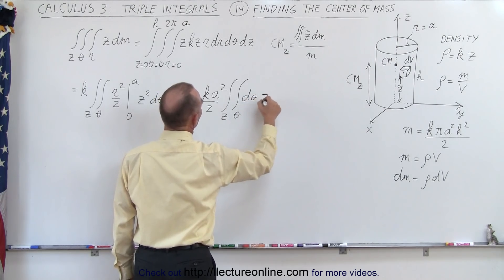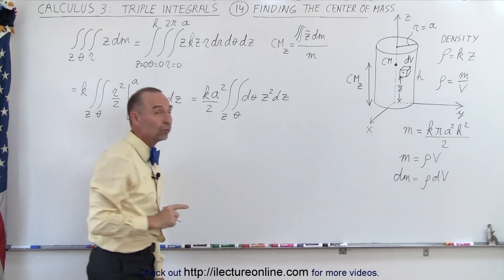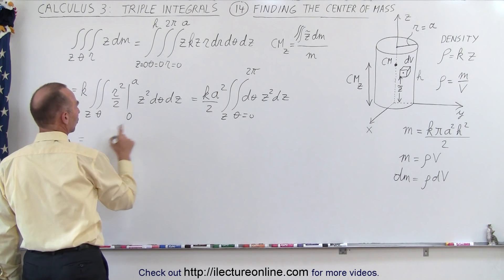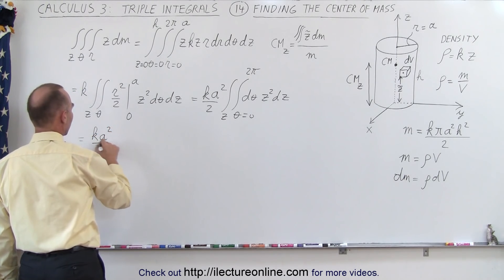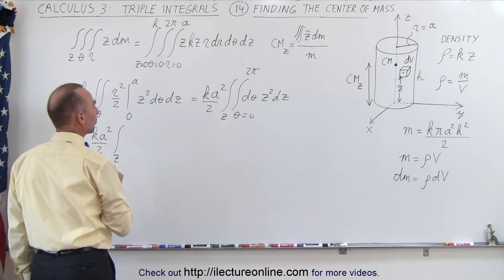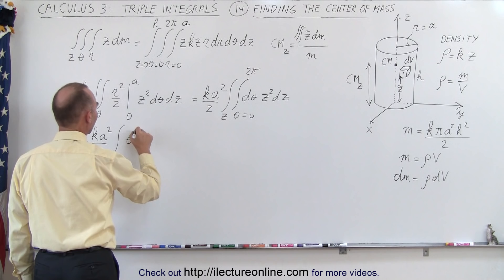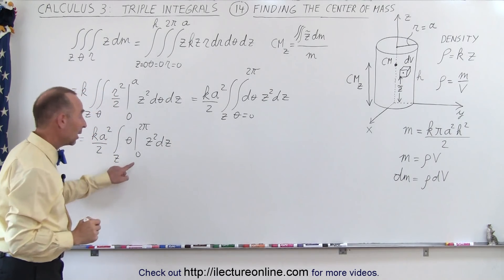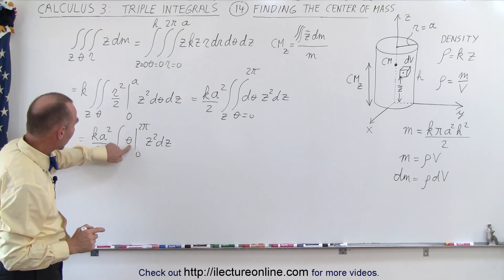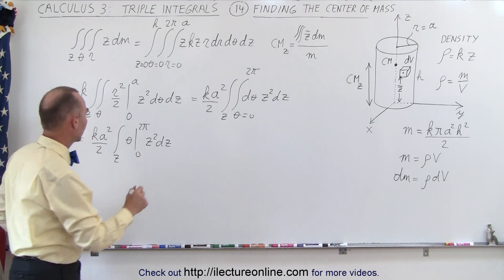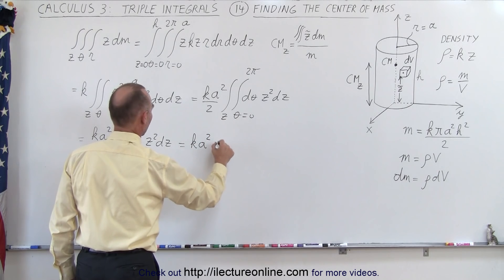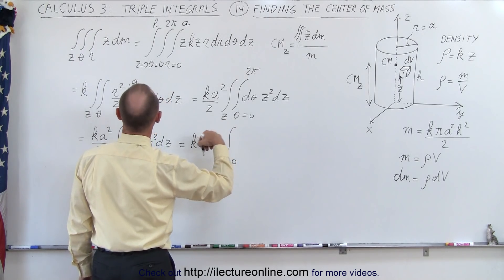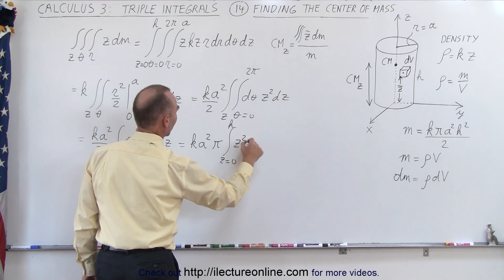Next we integrate over theta from 0 to 2 pi. That becomes k a squared over 2 times the single integral over z. d-theta becomes theta evaluated from 0 to 2 pi, giving 2 pi. The 2 in the denominator and the 2 in 2 pi cancel, leaving k a squared pi times the integral from 0 to h of z squared dz.